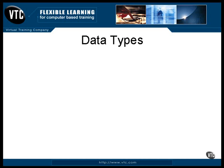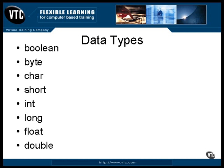Java contains a number of fundamental data types. Here's a complete list of them. Although Java derived from C, the data types are a bit different. For one thing, C doesn't have a boolean data type or a byte data type.